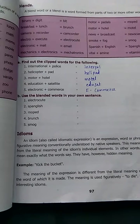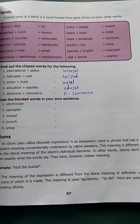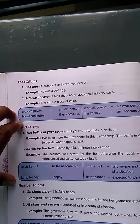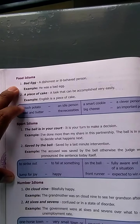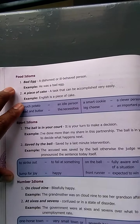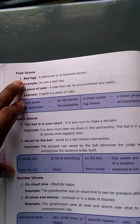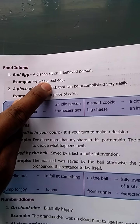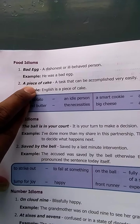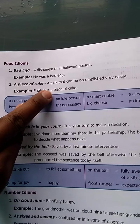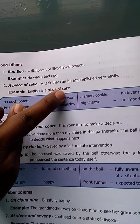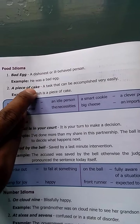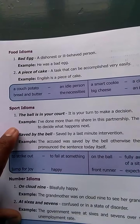This is a different type of idioms — food idioms. 'Bad egg' means a dishonest or ill-behaved person. 'A piece of cake' means a task that can be accomplished very easily — very easy.